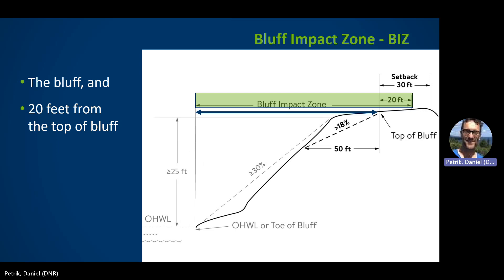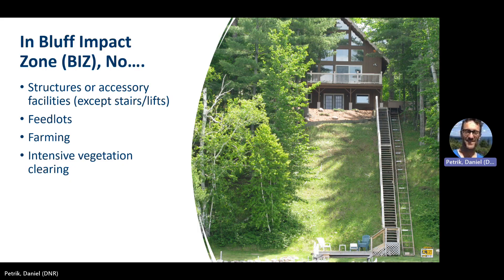All other bluff regulations within the local ordinances limit uses and activities in an area called the bluff impact zone. In this side profile, you can see that a bluff impact zone, or BIZ, is the bluff itself from the toe to the top and 20 feet from the top. Within the bluff impact zone, shoreline regulations prohibit structures, feedlots, farming, or intensive vegetation clearing. In this image, a stairway and an electric lift is shown as an allowable use in the BIZ. However, it looks like much of this BIZ was clear-cut, a violation of the prohibition on intensive vegetation clearing.